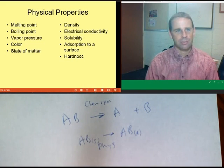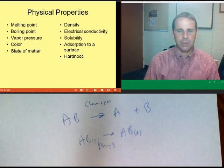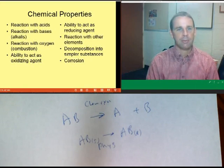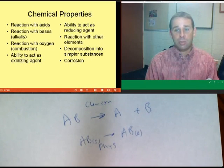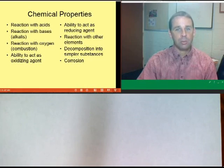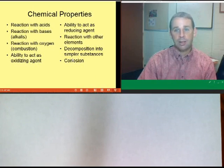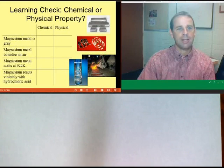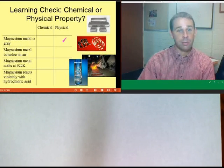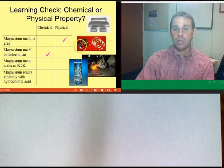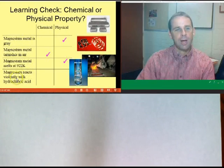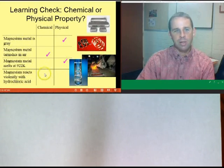Physical properties often involve changing states or phases. Chemical properties start with phrases like 'reacts with' or 'reactivity toward.' For magnesium: 'magnesium metal is gray' is a physical property. 'Magnesium tarnishes in air' — tarnishing means interacting with oxygen — is a chemical property. The melting point is a physical property. 'Violently reacts with hydrochloric acid' — the word 'reacts' gives it away — that's a chemical property.